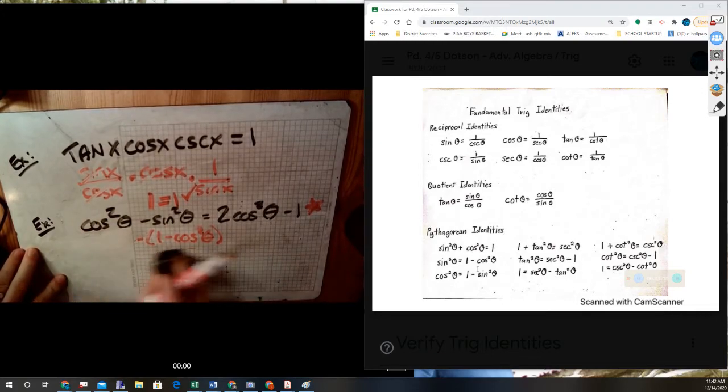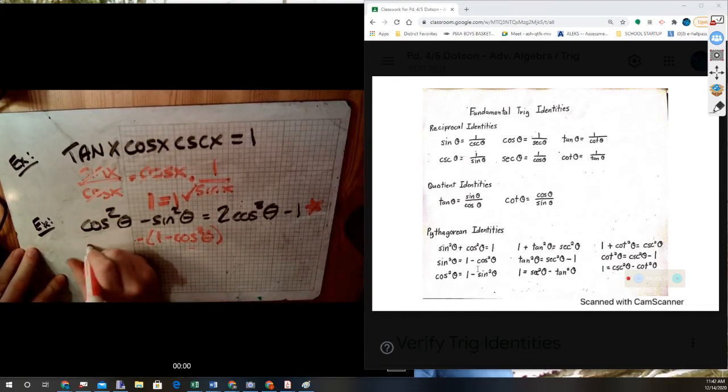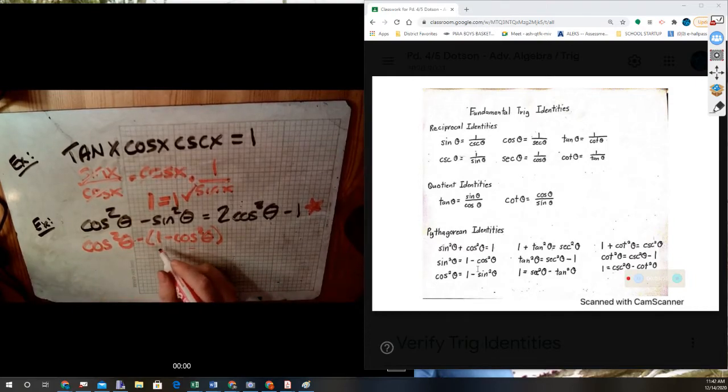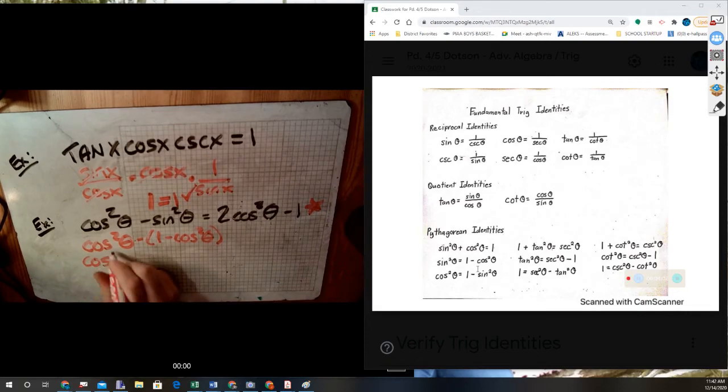So I'm going to keep this cosine squared the same and just change my minus sine squared. Okay, there's a Pythagorean identity. Let's do some basic algebra. Cosine squared, it's minus one, and now plus cosine squared. Can I do any sort of other algebra?